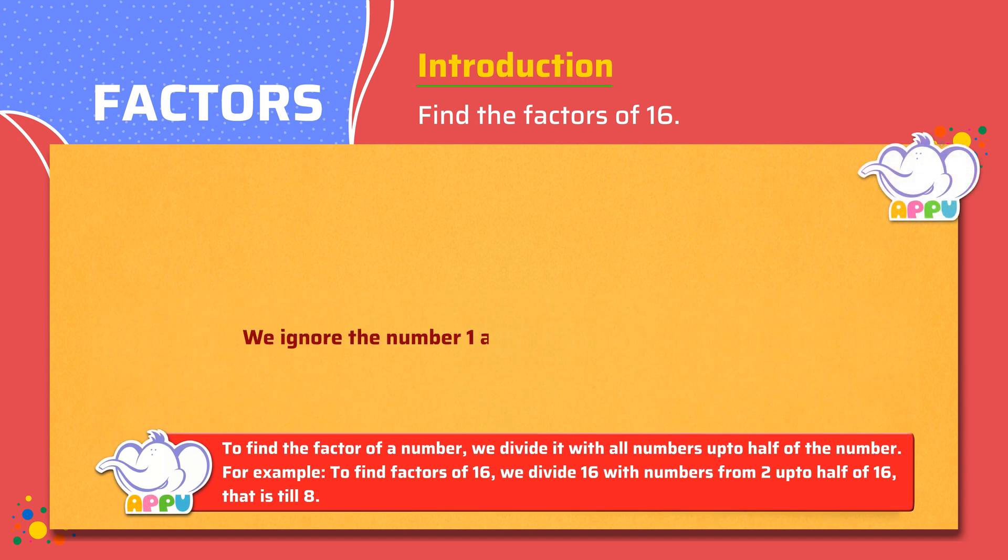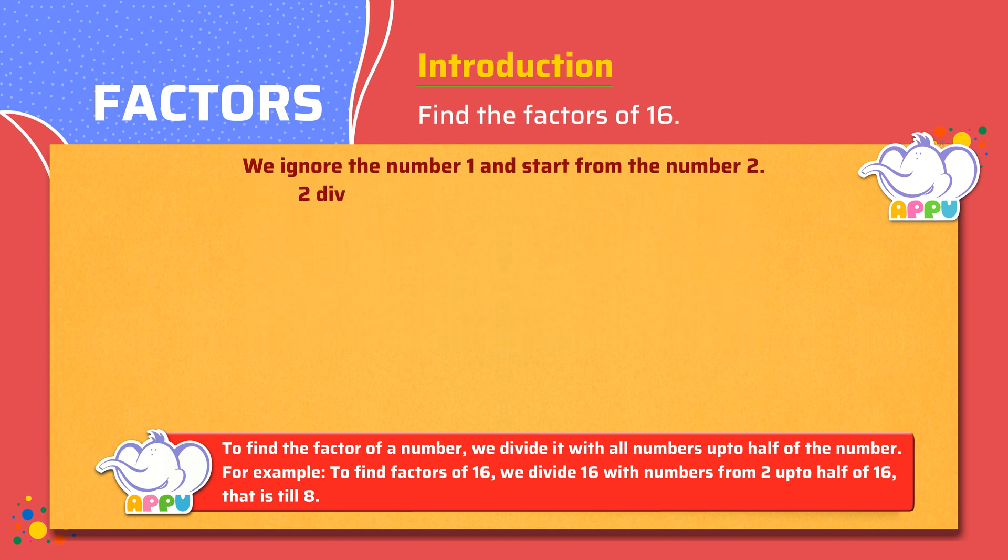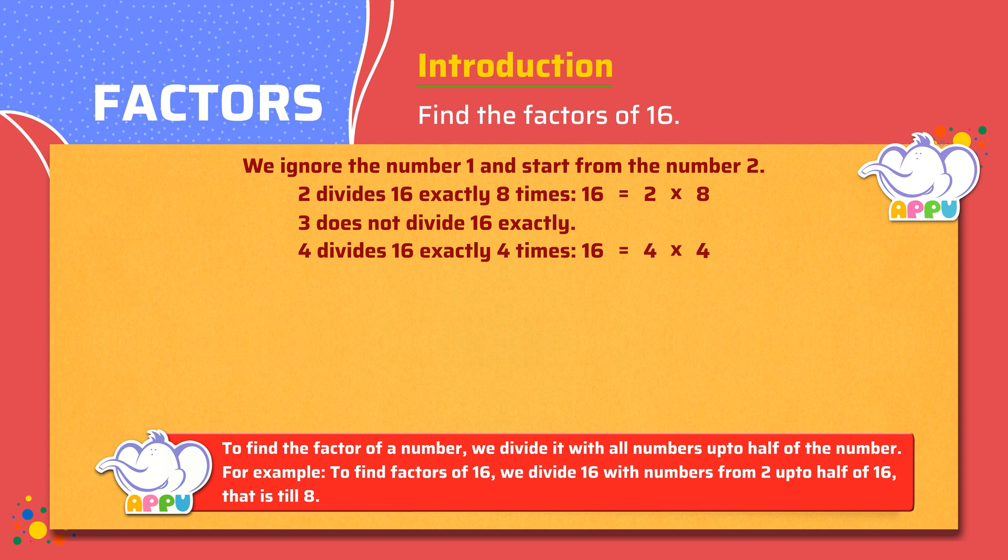We ignore the number 1 and start from the number 2. We know 2 divides 16 exactly 8 times. We write 16 equals 2 times 8. 3 does not divide 16 exactly. 4 divides 16 exactly 4 times. We write 16 equals 4 times 4. 5 does not divide 16 exactly. 6 does not divide 16 exactly. 7 does not divide 16 exactly.